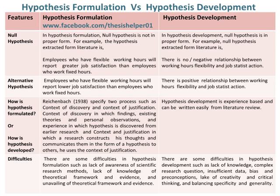In hypothesis formulation, the example of alternative hypothesis is: employees who have flexible working hours will report lower job satisfaction than employees who work fixed hours. Whereas in hypothesis development, the example of alternative hypothesis is: there is a positive relationship between working hours flexibility and job satisfaction.